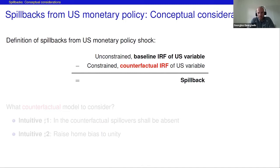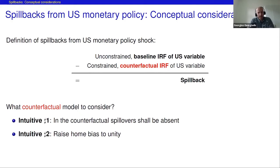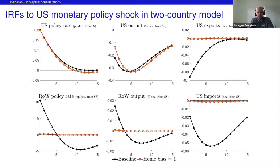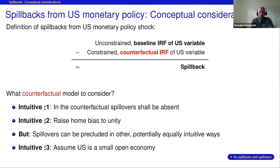If we define spillbacks as the difference between the baseline impulse responses and a counterfactual version of the model without spillovers, one intuitive counterfactual is to preclude trade by raising home bias to unity. In this counterfactual, the response of U.S. output to a domestic monetary policy shock is weaker — it falls by less — suggesting that spillbacks in the baseline amplify the domestic output effect of U.S. monetary policy.